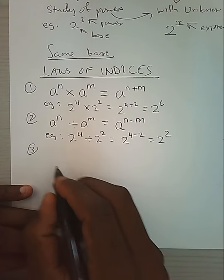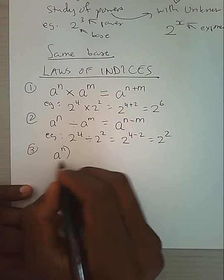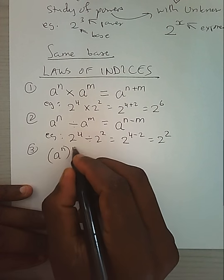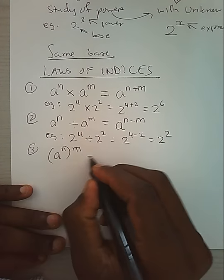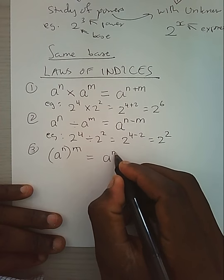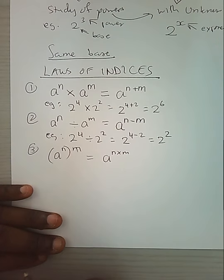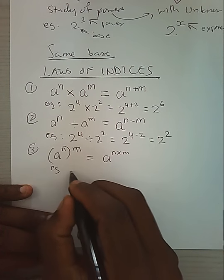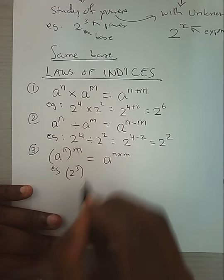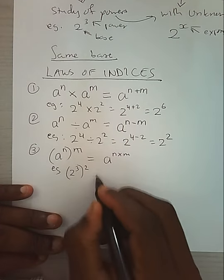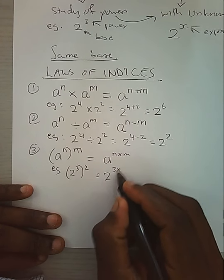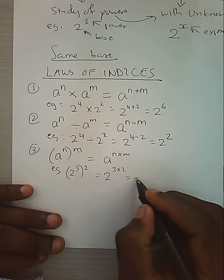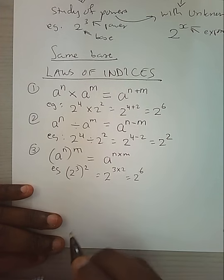Another rule states: if you have a power and then another power outside the brackets, it is exactly the same as multiplying the powers. For example, if I have 2 power 3 and another power outside the brackets is 2, this is the same as 3 times 2, giving us 2 power 6.